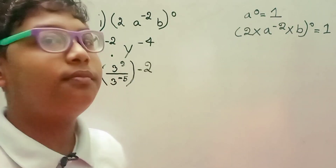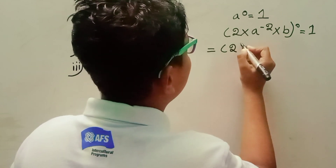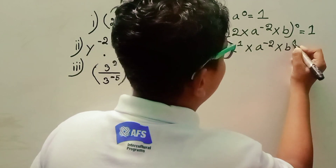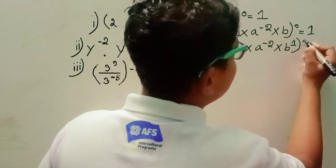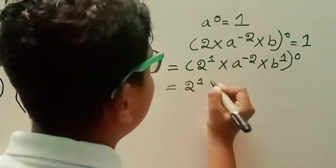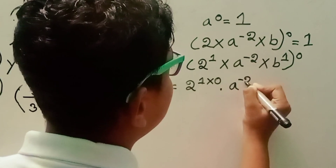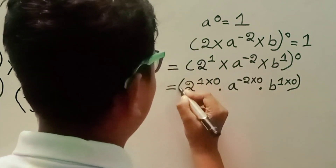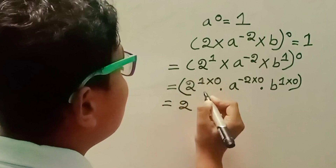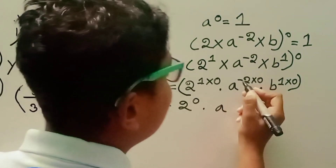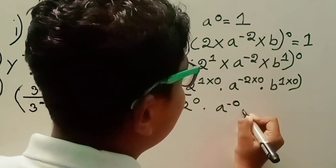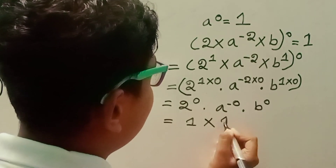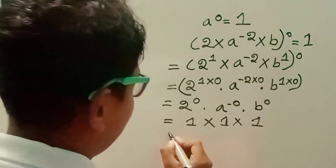Let's explain this. Equal to two to the power one, into a to the power minus two, into b to the power one, then whole to the power zero. Applying the power of a power rule, each exponent is multiplied by zero, giving two to the power zero, a to the power zero, b to the power zero, each equal to one. So the result is one.